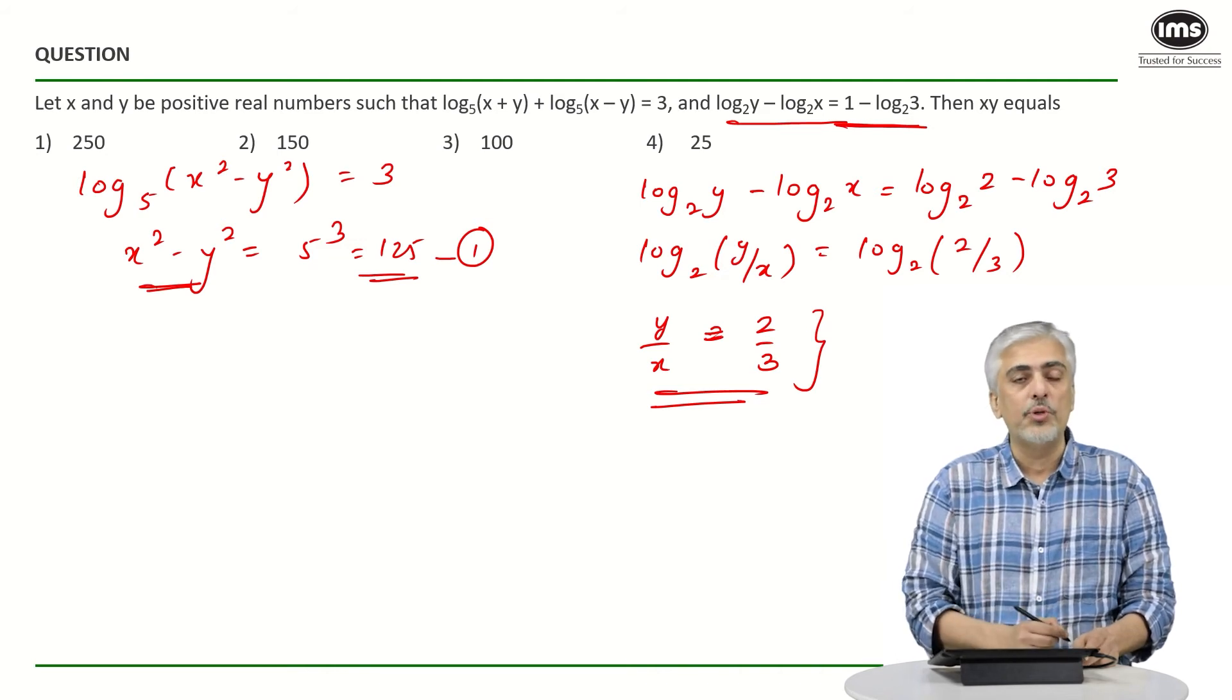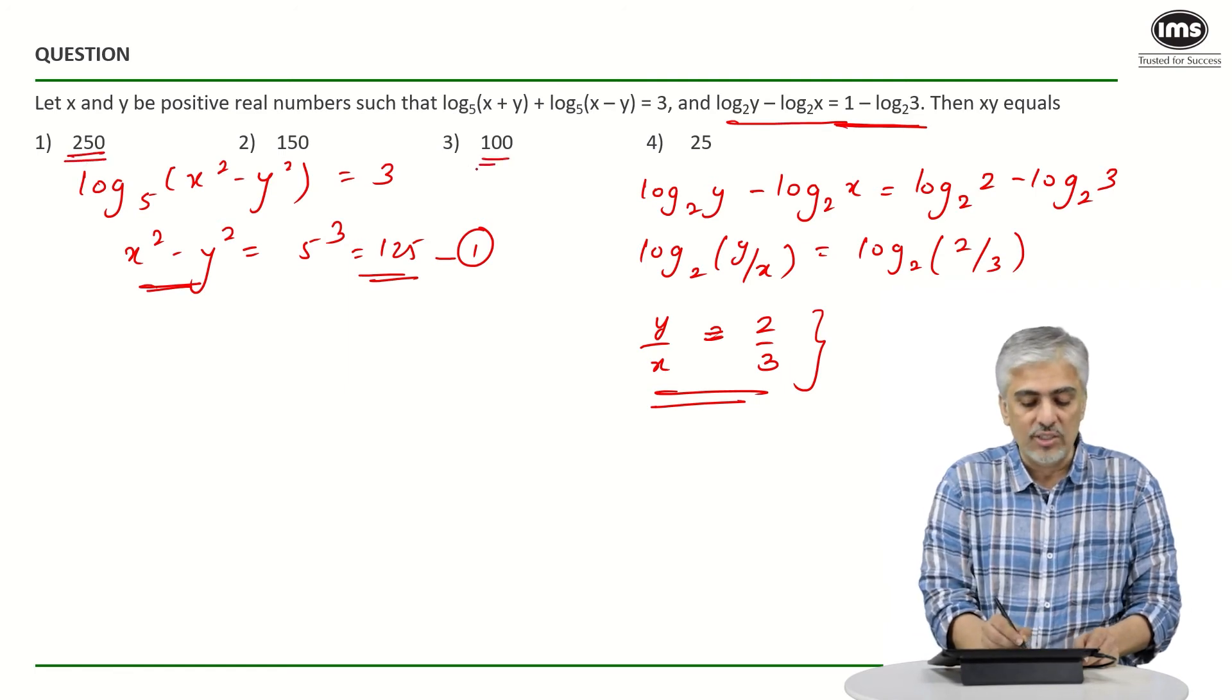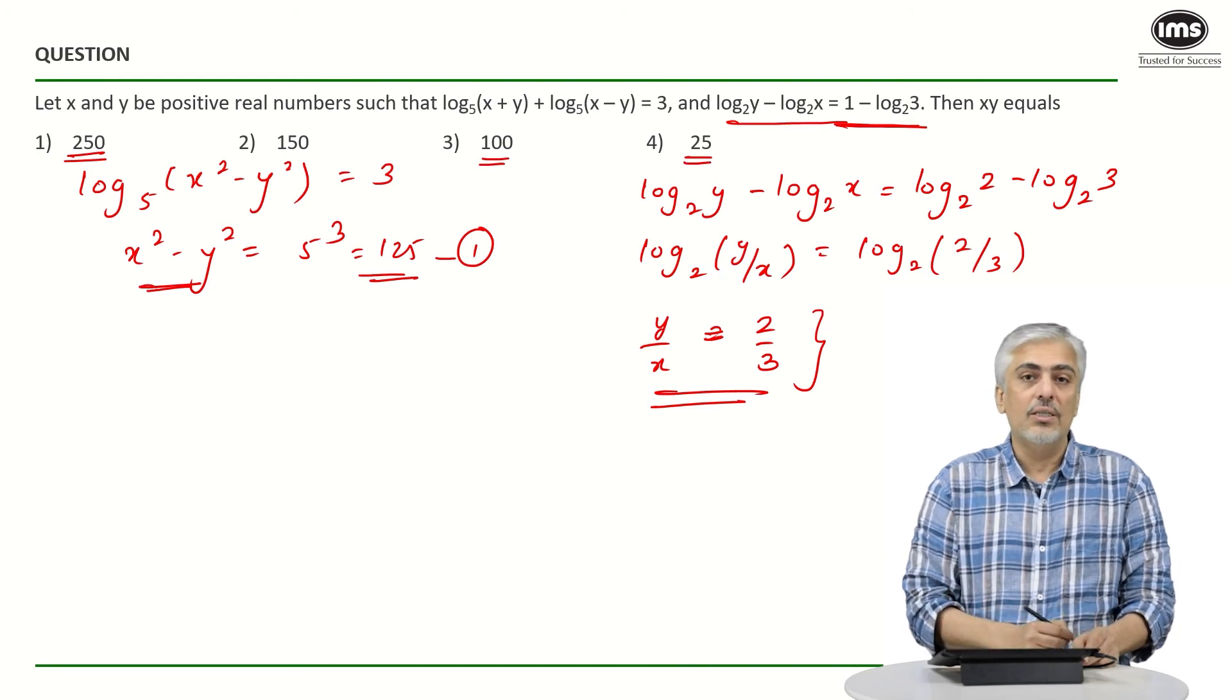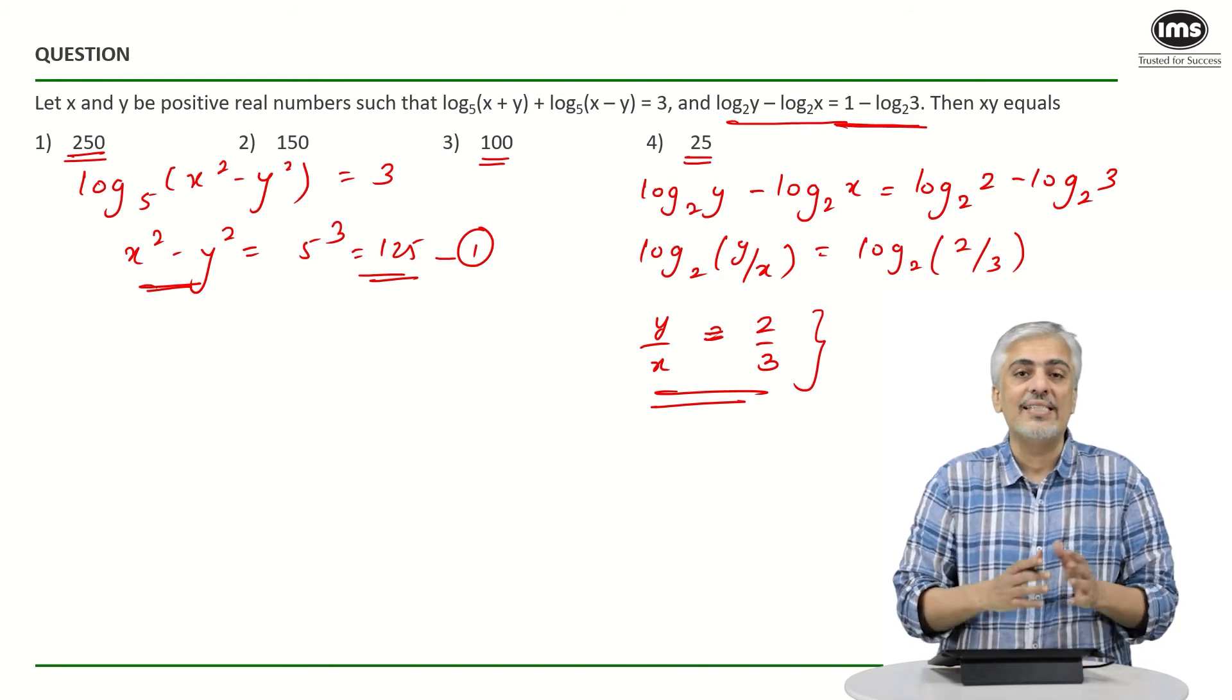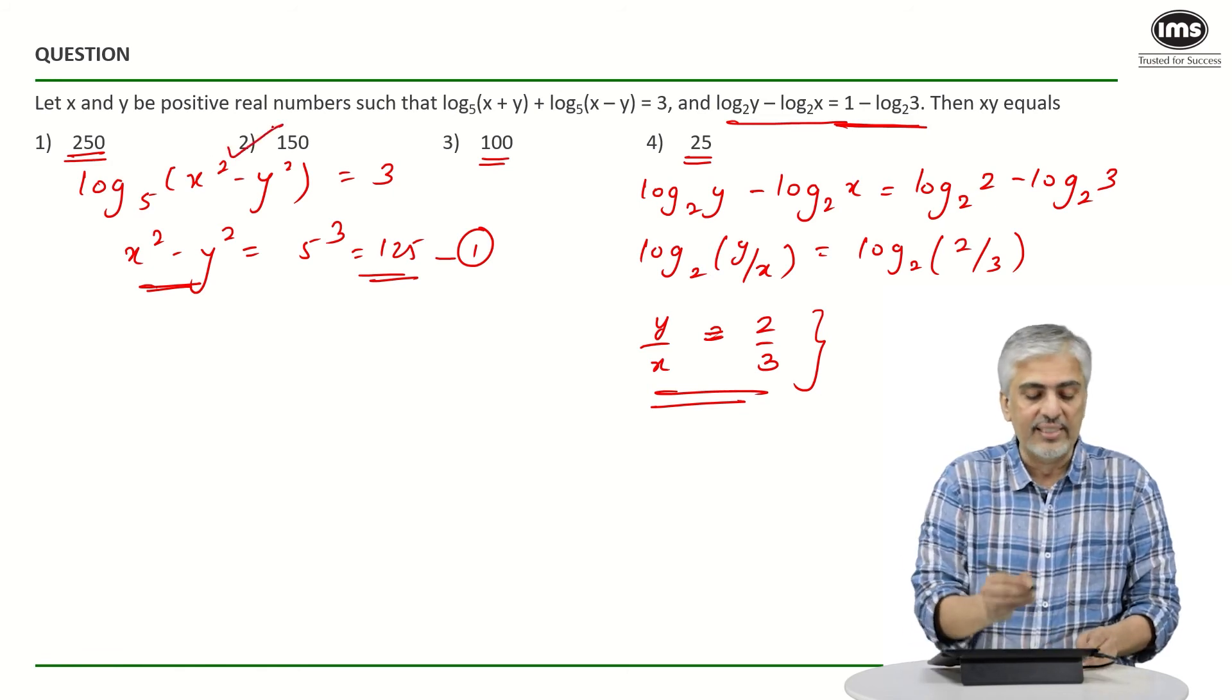If I go via the option, 250 is not a multiple of 6, 100 is not a multiple of 6, and 25 is also not a multiple of 6. Which means in an exam scenario if I want to save time, I would have taken a leap of faith and mark the second option. But let us have a look at it and let us try it further.